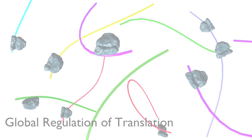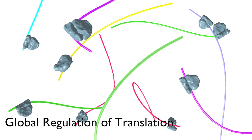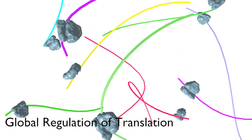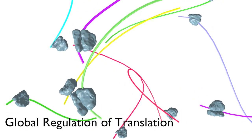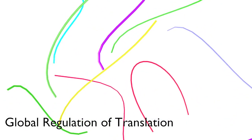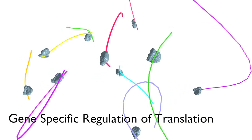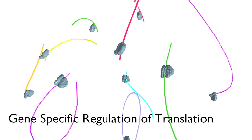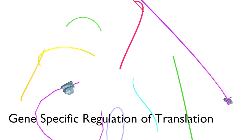Here we will discuss two broad categories of translation regulation: the global regulation of translation, wherein a majority of mRNAs in the cell are translationally down-regulated in response to an external signal; and gene-specific regulation, wherein specific transcripts are translationally regulated through sequence motifs that they contain.